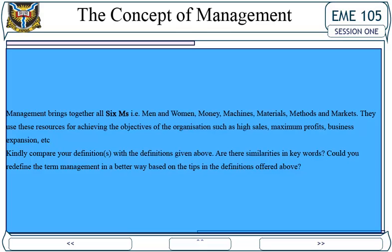In another definition, management is viewed as planning, organizing, leading, and controlling the efforts of organization members and using all other organizational resources to achieve stated organizational goals. Management brings together all six M's — men and women, money, machines, materials, methods, and markets — using these resources to achieve objectives such as high sales, maximum profits, and business expansion.